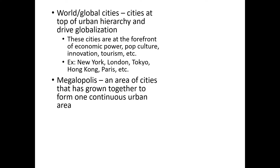The last type of city we'll talk about is really just a bunch of cities altogether. This is what's called a megalopolis — an area of cities that has grown together to form one continuous urban area. As a simple example, just imagine if Chicago kept sprawling farther and farther out, and our northern neighbor Milwaukee also kept sprawling farther and farther out. Eventually, if you were driving from Chicago to Milwaukee, you just wouldn't see an end to all the urban structures. A megalopolis is something you see when you have lots of large cities that continue growing near each other.